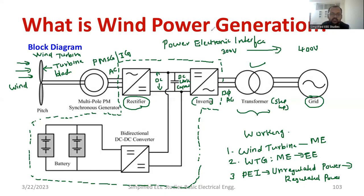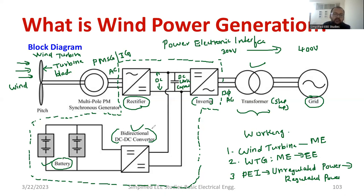Now let me discuss the backup segment. Excess power can be stored inside a battery bank using a bidirectional DC-DC converter. When excess power is produced from the wind turbine generator, the power is sent to the battery bank and it gets charged. In case the wind turbine generator is not working or sufficient wind energy is not available, you can take the power supply from the battery where energy is already stored. That is why we use a bidirectional DC-DC converter.